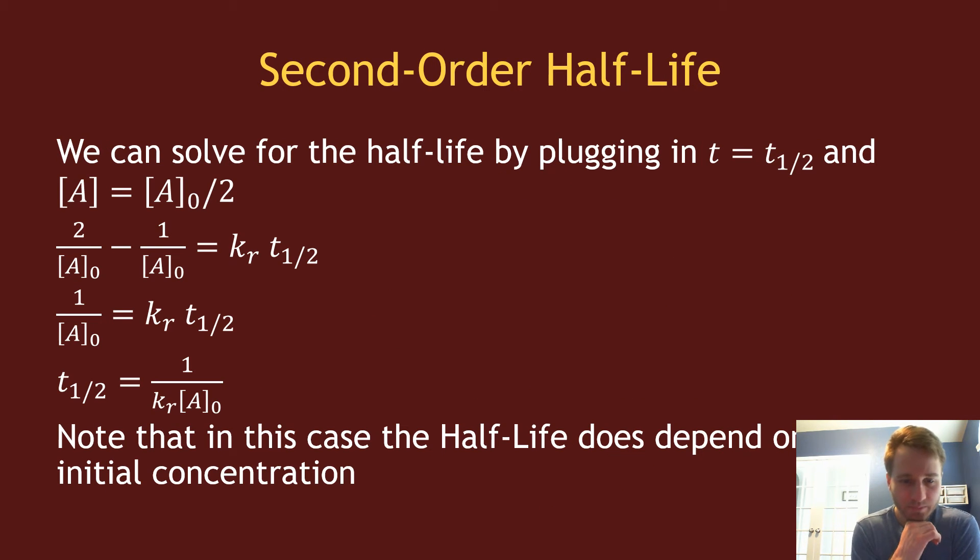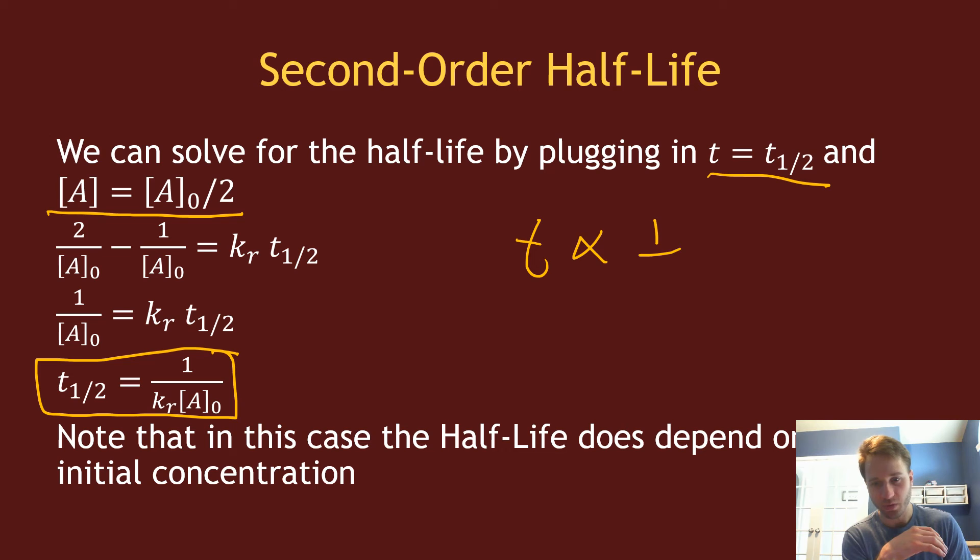For the half-life, as I mentioned, this is going to depend on the concentration. You solve for the half-life by plugging in t = t₁/₂ and [A] = [A]₀/2. You plug that into the equation and solve, and you get the half-life. It depends on the rate constant - the half-life for any order of reaction is proportional to one over the rate constant. But it depends on the concentration, which varies depending on the order of the reaction.